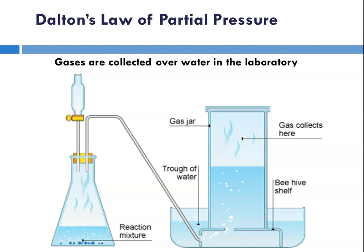What you do for the water is you can look it up in a table. Knowing what the temperature in the room is, you can subtract out what the partial pressure of water vapor is at that temperature.